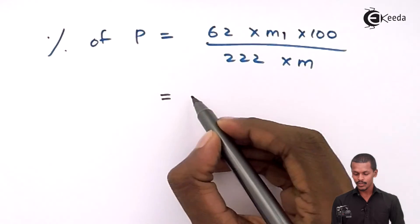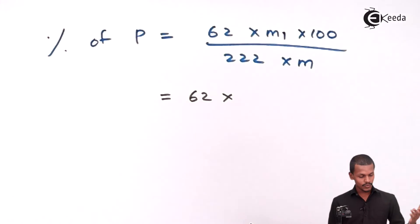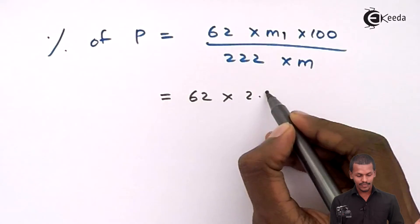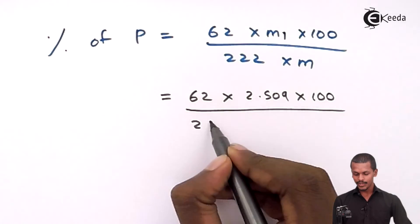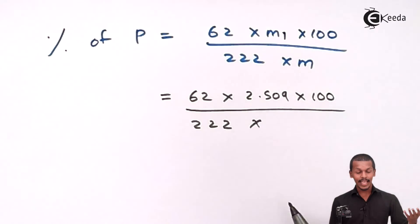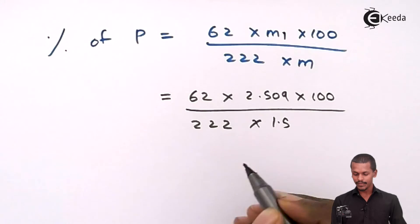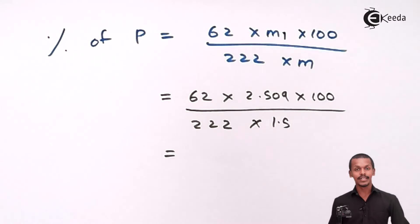Now we substitute the values. 62 × M1, which is 2.509, × 100, divided by 222 × m, the mass of the organic compound, which is 1.5 grams. We can now calculate the percentage of phosphorus.